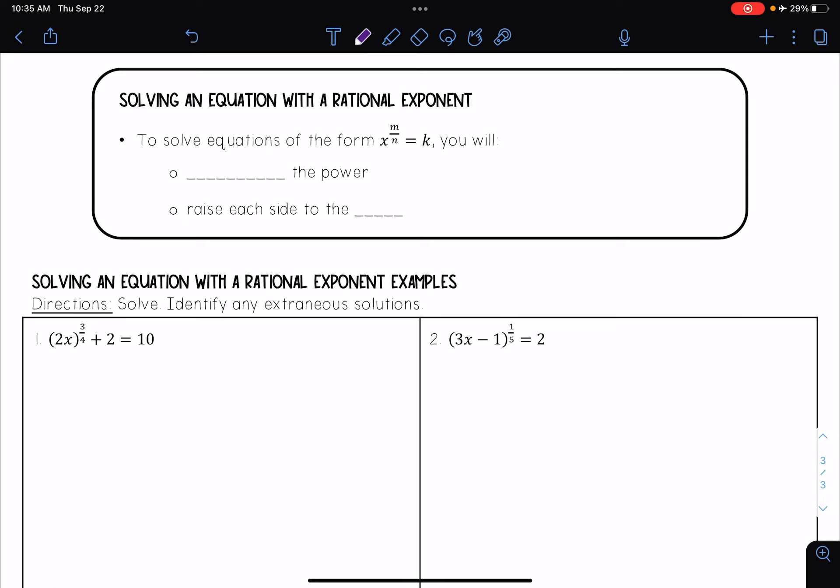you will first isolate the power. So isolate that term with the power and then raise each side to the n over m.